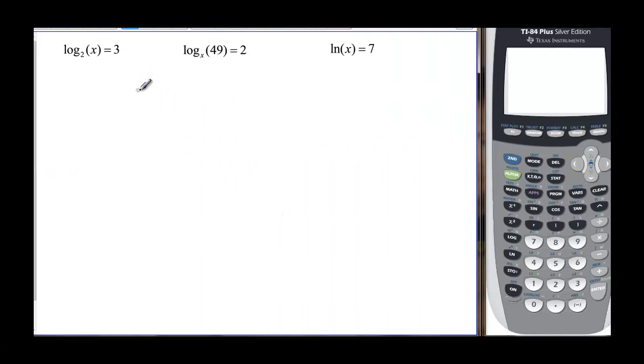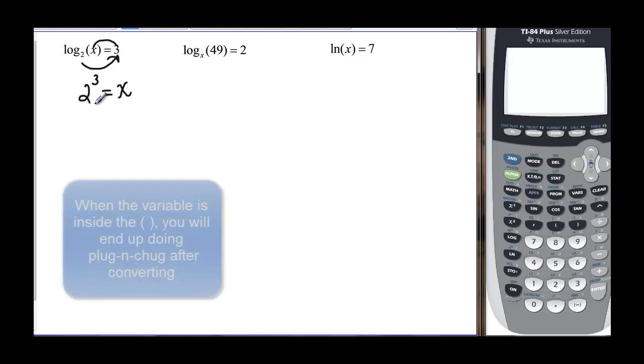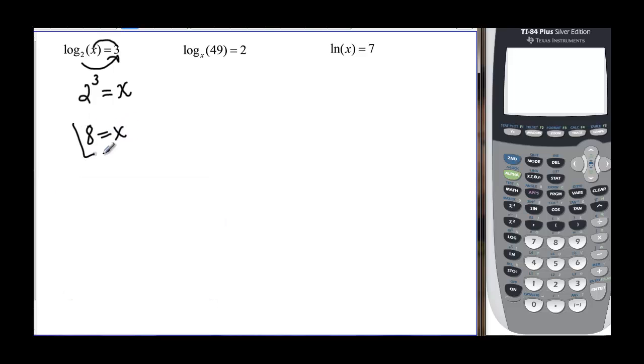So let's convert and see what we can do. So if we hop across the equal sign, we start with our base because it's an exponential equation we're trying to go to. We hop across to get our exponent, and then we hop back to find that it's equal to x. And when you have a problem like this, two to the third, well, we know what that is. And if you didn't, you could go to your calculator. But two to the third, two times two times two is eight. So x is equal to eight.